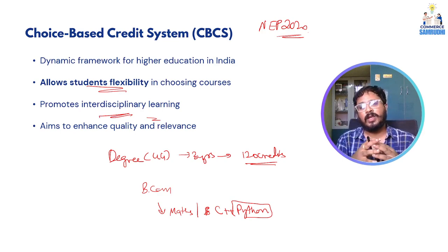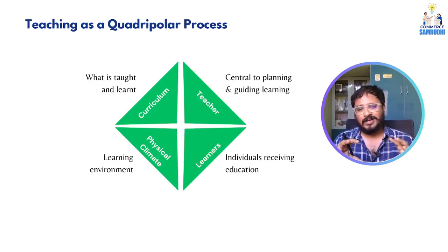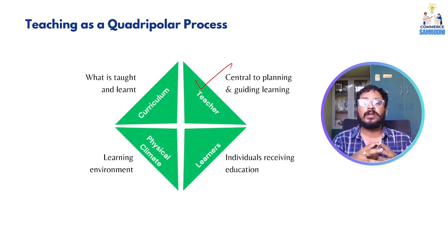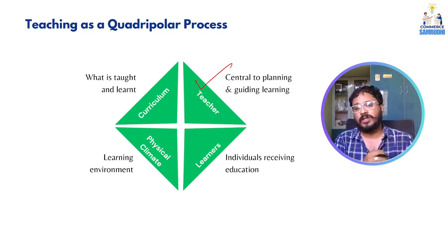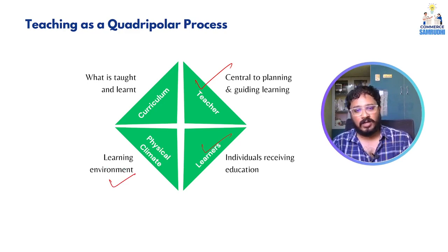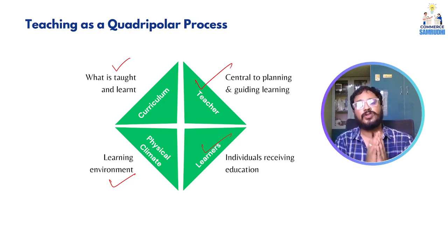This promotes interdisciplinary and multidisciplinary learning, as supported by NEP 2020. Students can pursue other domain subjects beyond their own. A commerce student can explore artificial intelligence or coding. Post NEP 2020, students can choose education as per their liking and will be recognized legally by the government and institutions. Teaching as a quadri-polar process depends on four poles: the teacher — central to planning and guiding learning; the learners — individuals receiving education; the learning environment — university setup or online education; and the curriculum — the sum total of learner's experiences.